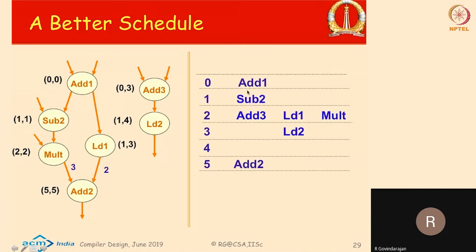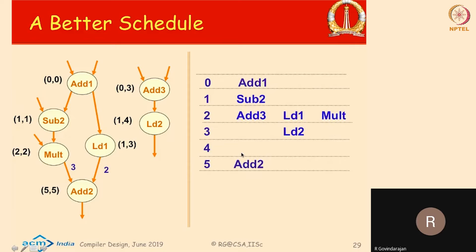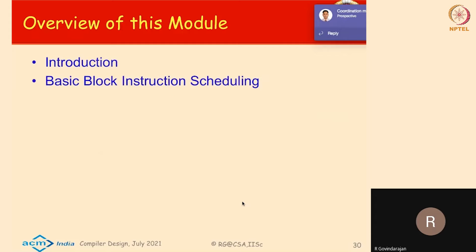Instead, if I had scheduled subtract two instead of add three first, I would get a better schedule. If I scheduled add one and then subtract two, multiply can be scheduled one cycle earlier, and therefore the dependent add also one cycle earlier. The add which is not in the critical path is scheduled one cycle later in cycle two, and the dependent load is scheduled in the next cycle — but the load completes before the add anyway. This is a better schedule because the first schedule scheduled a non-critical-path node early, whereas in the second schedule the critical path node is given priority, yielding fewer total cycles.